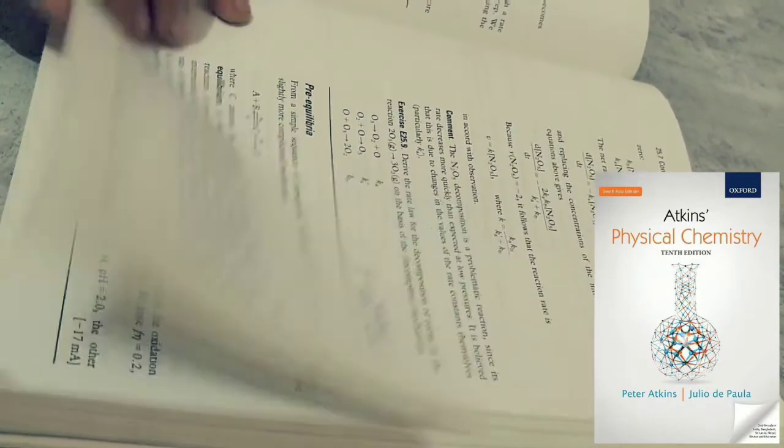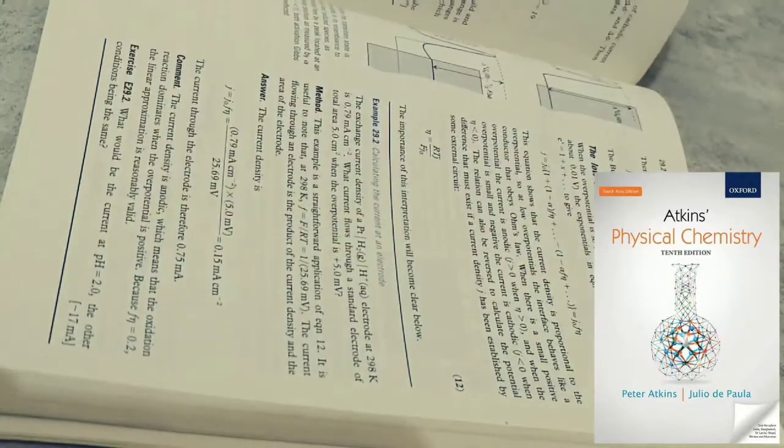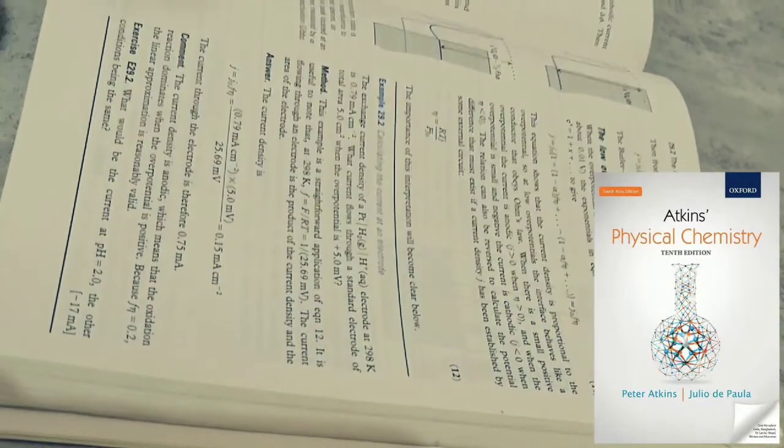Atkins is an English chemist and a former professor of chemistry at the University of Oxford and a fellow of Lincoln College. Peter Atkins is regarded as an exceptional writer of chemistry textbooks and has authored numerous texts and guidebooks on the same.